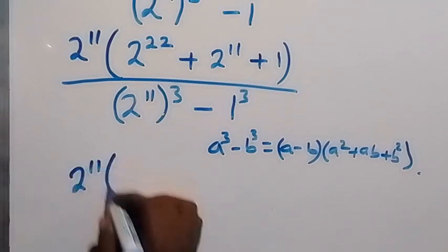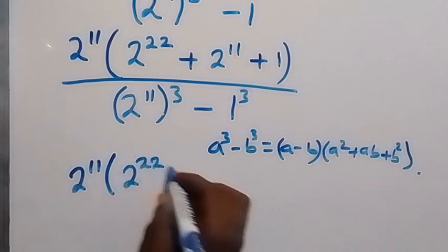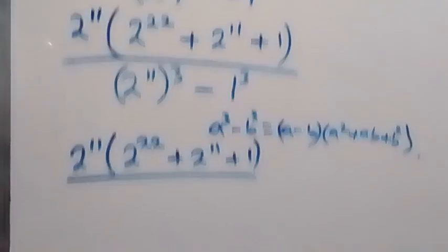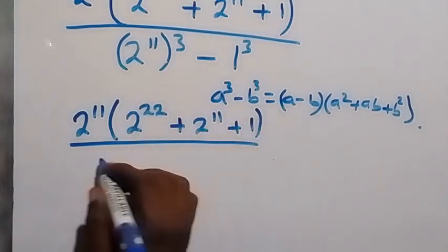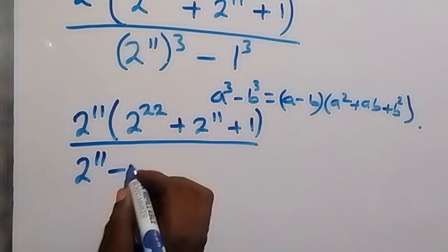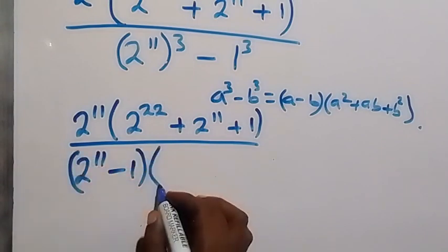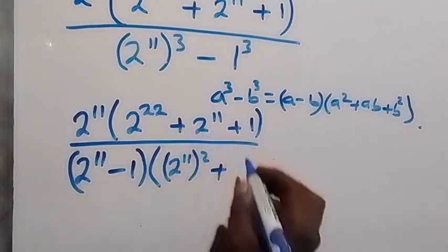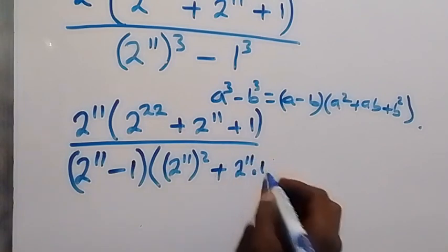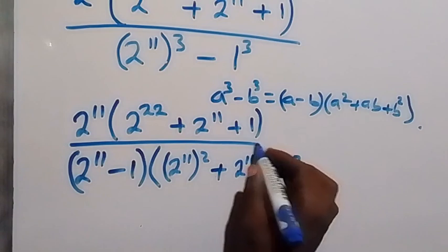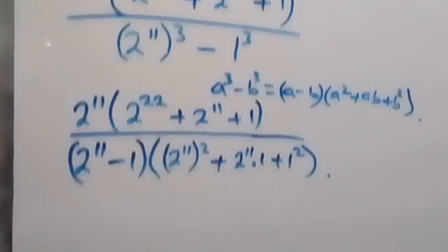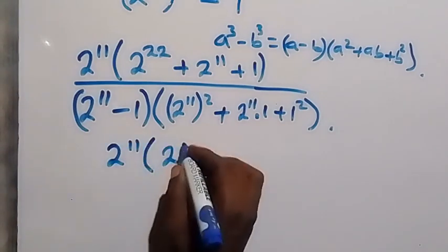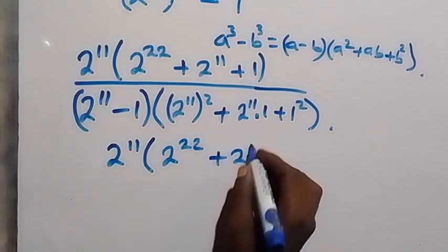It becomes 2 raised to power 11 into bracket: 2 raised to power 22 plus 2 raised to power 11 plus 1, and that is over 2 raised to power 11 minus 1, into bracket: 2 raised to power 11 squared, plus 2 raised to power 11 times 1, plus 1 squared, and we close bracket.